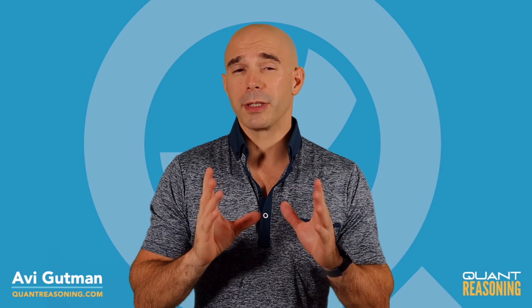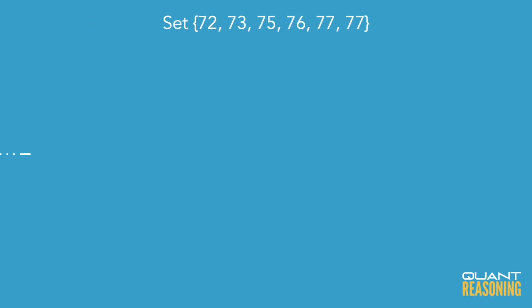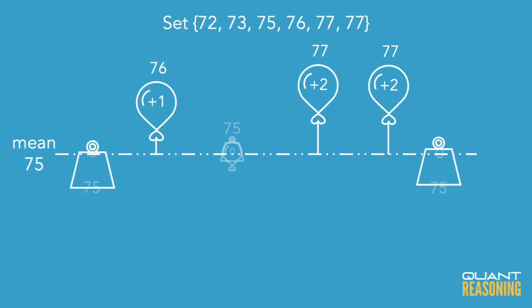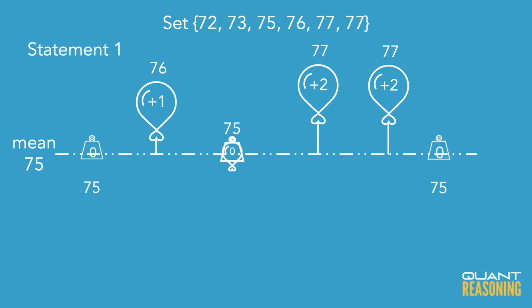If you understand that concept, then this question doesn't even require pen and paper. The question wants to know how many of the numbers in this set are equal to the average of the set — but Statement 1 tells us that none of the numbers are below the average.